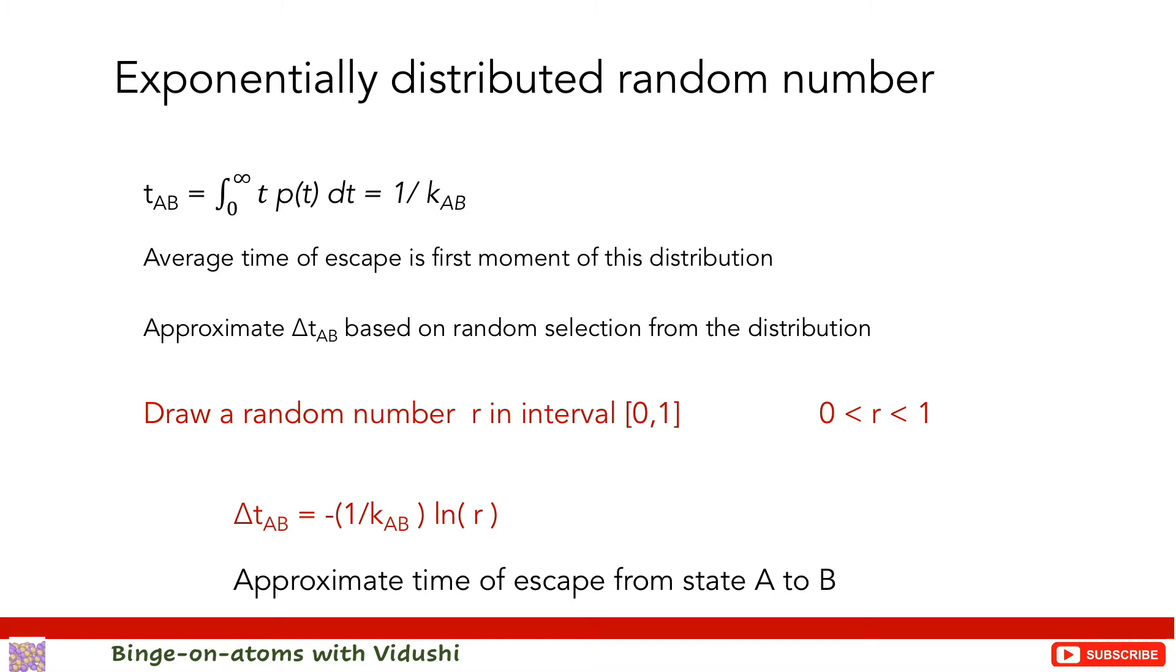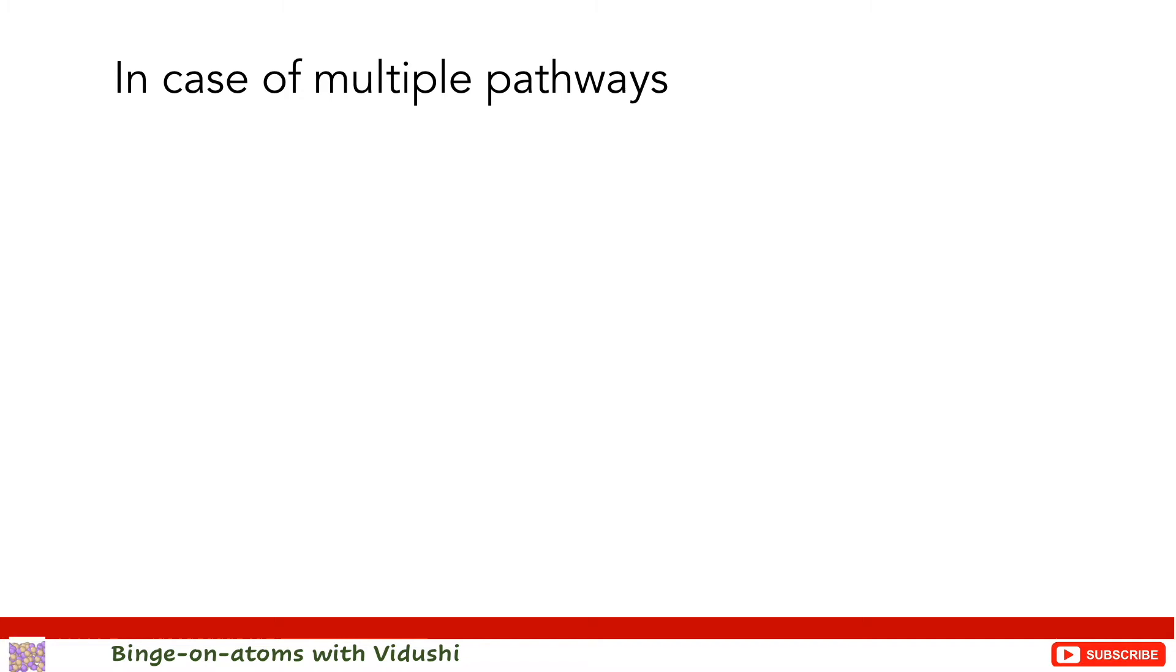Now let's move a step further towards the case where at each step of KMC trajectory, a multitude of processes are happening from state A to state B, meaning multiple pathways are possible. In that case, for each pathway we determine the probability distribution, and then probability of the time of first escape from state A through any of the processes A to B is defined. You will notice that the rate constant KAB is replaced by K_total, the sum of all individual elementary rate constants.